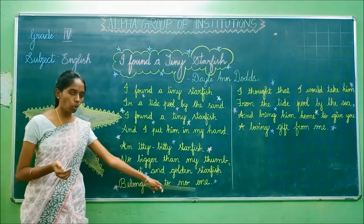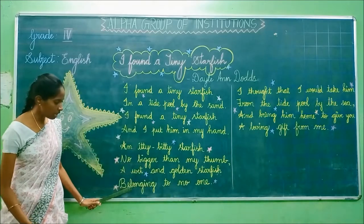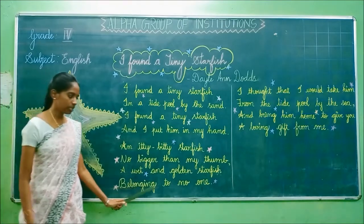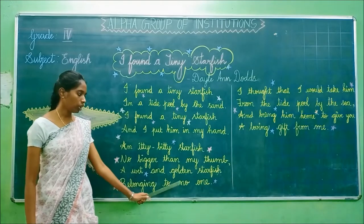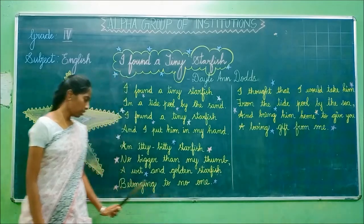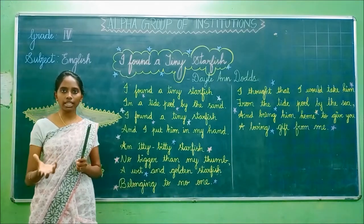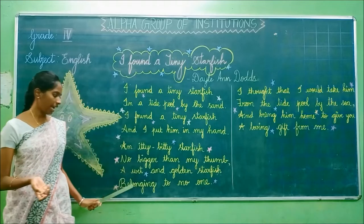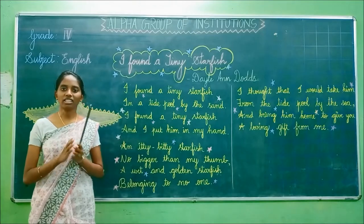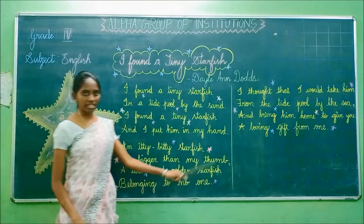Belonging to no one. B-E-L-O-N-G-I-N-G, to, T-O, no one, N-O O-N-E. Belonging means a thing or person owned by someone. And the poet says the starfish is belonging to no one.